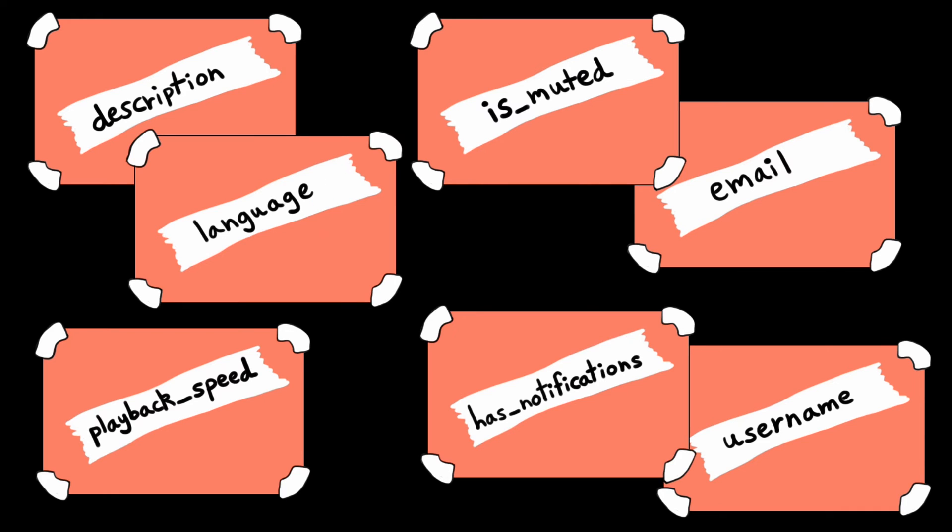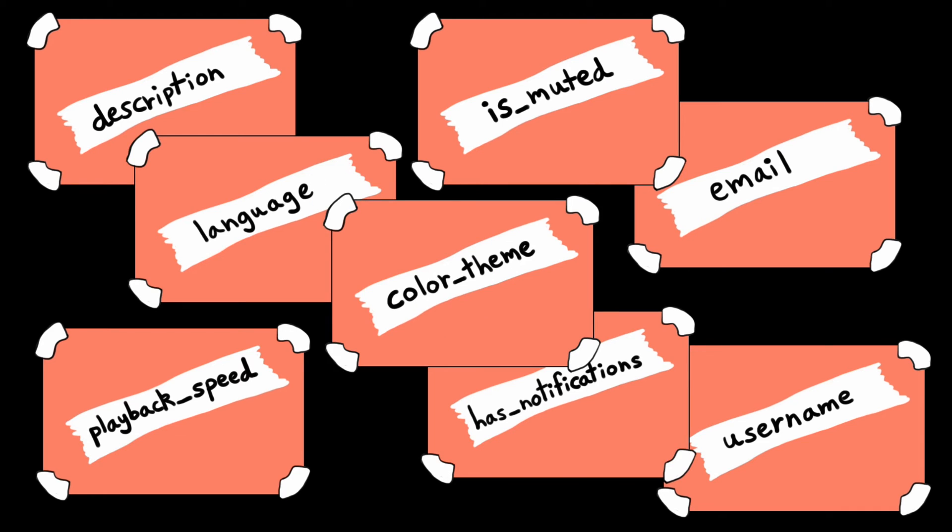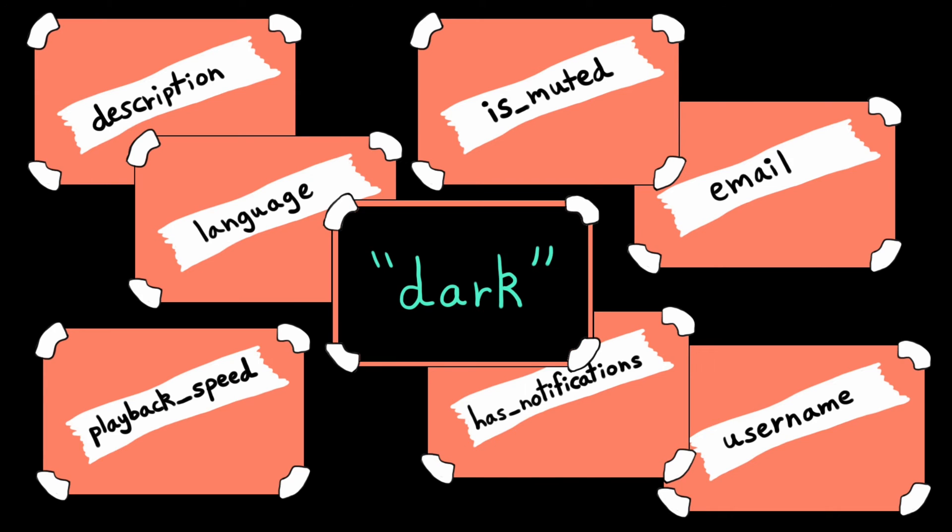You can think of variables like mini-whiteboards. When you create a new variable, you go off and get a new whiteboard. You give that whiteboard a name, and then you write a value on it to store it there. You can create 100 variables, which means you went off and got 100 different whiteboards. And if you want to know what value is stored on a specific whiteboard named color_theme, then you look for the label color_theme, grab that whiteboard, and look at the value written on it.